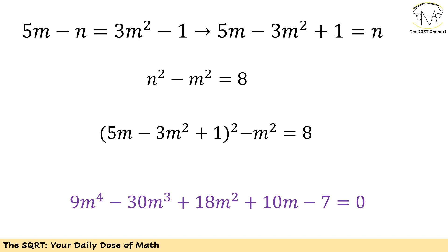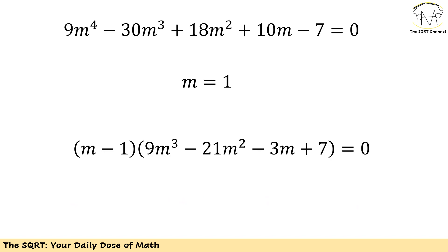On the other hand, from the second equation we have n squared minus m squared equals 8. I'll substitute n with (5m minus 3m squared plus 1) and simplify. If you take your time to simplify, you'll see that you end up with a degree-4 equation. Checking the sum of coefficients: 9 minus 30 is negative 21, plus 18 is negative 3, plus 10 is 7, minus 7 is 0. So m equals 1 is one of the roots.